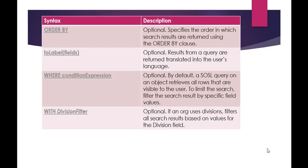Order by lets you order the results of a query — for example, by last name, which will arrange records in alphabetical order. It specifies the order in which search results are returned. We're going to take examples of most of these in the upcoming tutorial. This tutorial gives you an overview of the syntax and the different optional clauses.